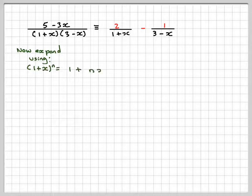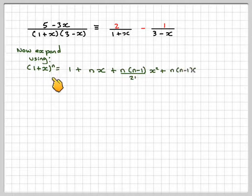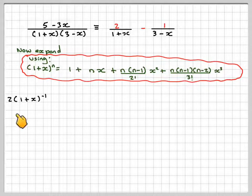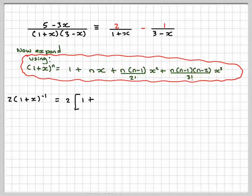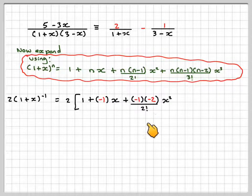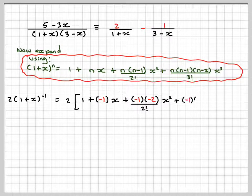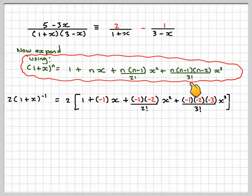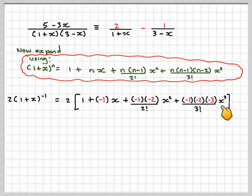Now, if we expand, and we'll expand that using the binomial theorem up to x cubed for a negative index, we've got a negative index here. We're going to have to expand 2 times 1 plus x to the minus 1. That's 2 outside the bracket. So we're going to have 1 plus n which is going to be minus 1 times x plus minus 1 times minus 2 over 2 factorial x squared plus minus 1 minus 2 minus 3 over 3 factorial x cubed using this idea here. Stop here because we've got to x cubed.